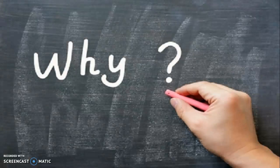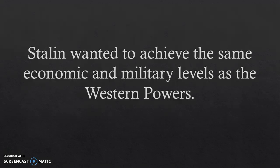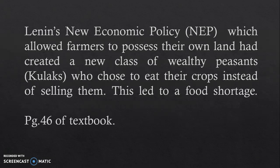Why did they want to shift to modernisation? Stalin wanted to achieve the same economic and military levels as the other Western powers. Furthermore, Lenin's new economic policy, which allowed farmers to possess their own land, had created a new class of wealthy peasants — the kulaks — who chose to eat their crops instead of selling them. This led to a food shortage. Stalin firmly believed in communism, where everyone should have equal wealth, so he was against the kulaks having more than the rest.